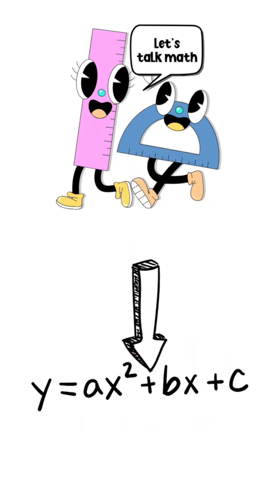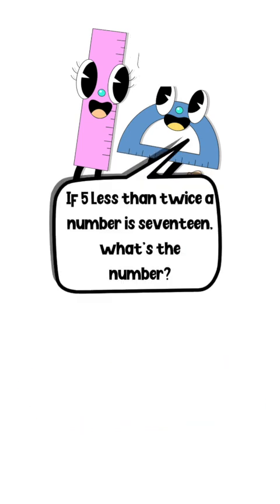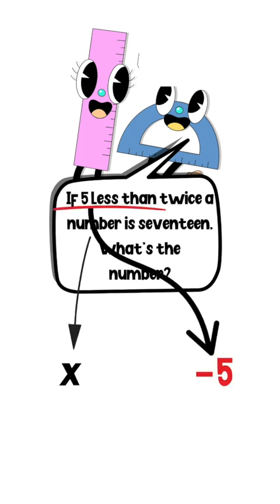Okay, ready? Here we go. How would we translate this into an equation? If 5 less than twice a number is 17, what's the number? You're mocking me. Let's use the letter x to represent the unknown number. So put that x here. Okay, now let's just start writing out what we know. How would we write 5 less?